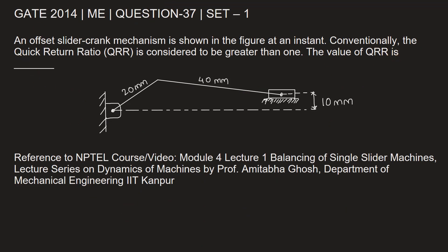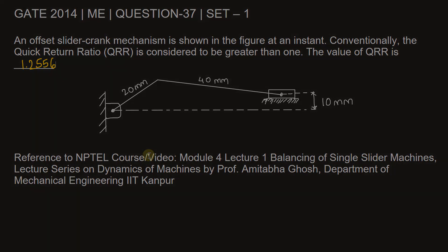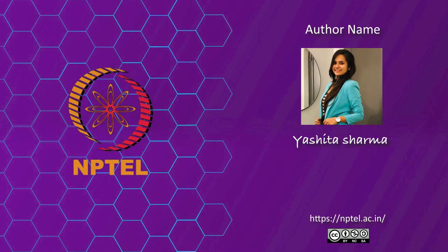Value of QRR is 1.2556, can be rounded off and written as 1.256. To learn more about slider crank mechanism, you can refer to the NPTEL video module 4 lecture 1 balancing of single slider machines from the course lecture series on dynamics of machines by Professor Amitabha Ghosh. He is from department of mechanical engineering IIT Kanpur. I hope the solution will help you clear your doubt and remember to give us an update. Thank you.